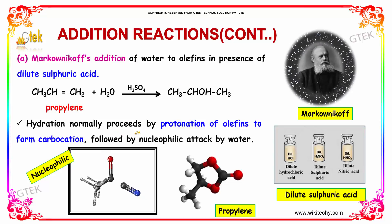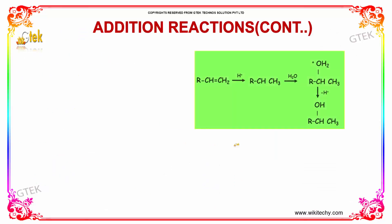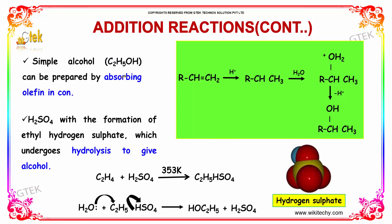Hydration normally proceeds by protonation of olefins to form a carbocation, followed by nucleophilic attack by water. Simple alcohol C2H5OH can be prepared by absorbing olefins in concentrated H2SO4 with the formation of ethyl hydrogen sulfate, which undergoes hydrolysis to give alcohol. C2H4 reacts with sulfuric acid at 353 Kelvin to form C2H5HSO4. The lone pairs on oxygen react with carbon to form HOC2H5 and H2SO4, and H+ adds to the carbon to remove the double bond in the presence of water to form RCHOHCH3.